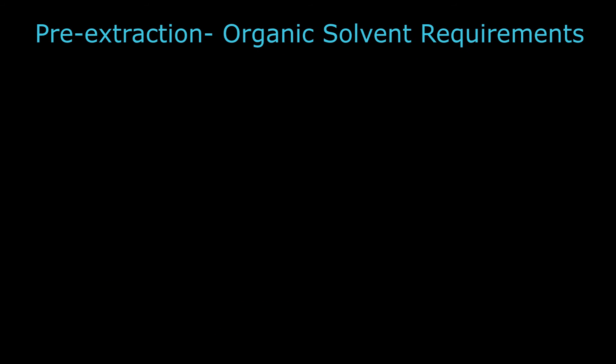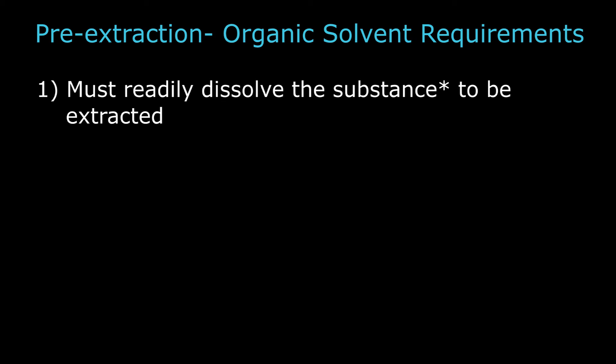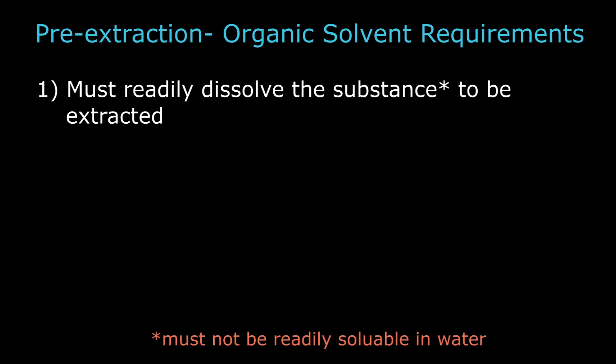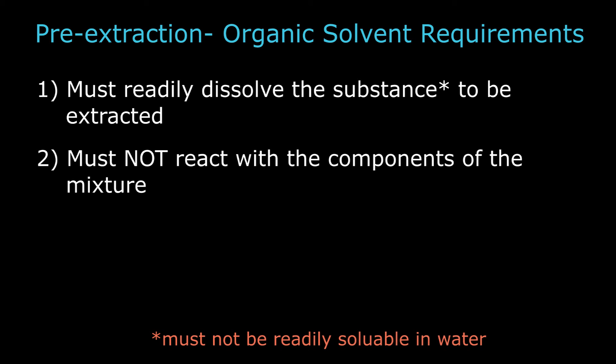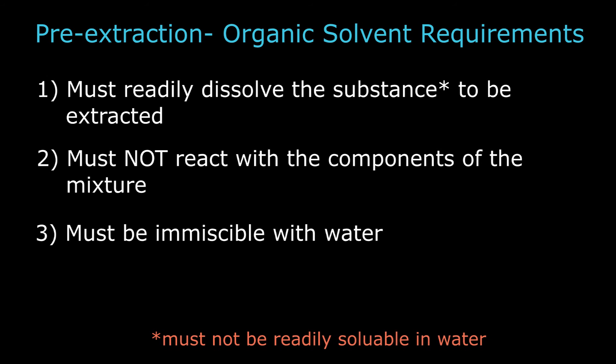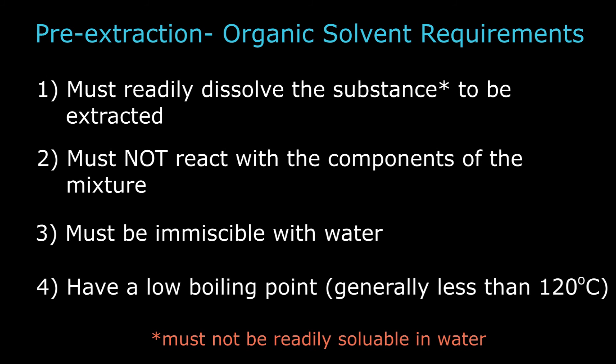There are a few things we need to know about the organic solvent before we can start the extraction. First, the solvent must readily dissolve the substance to be extracted, and the substance must not be readily soluble in water. Second, the solvent must not react with the components of the mixture. Third, the solvent must be immiscible with water. Fourth, the solvent should have a low boiling point so it can be easily removed.